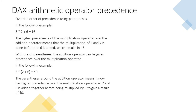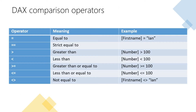In the following example the higher precedence of the multiplication operator over the addition operator means that the multiplication of 5 and 2 is done before the 6 is added, which results in 16. But with the use of parentheses the addition operator can be given precedence over the multiplication operator. So in the next example the parentheses result in the 2 and 6 being added together first before being multiplied by 5, which gives a result of 40. The next chart shows the different types of operators available in the comparison operators group along with examples of each in use.